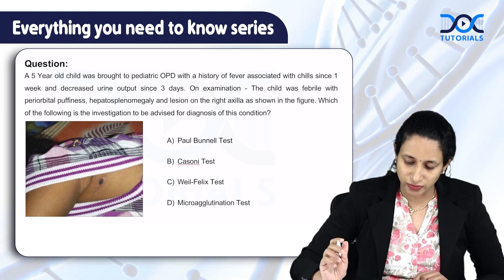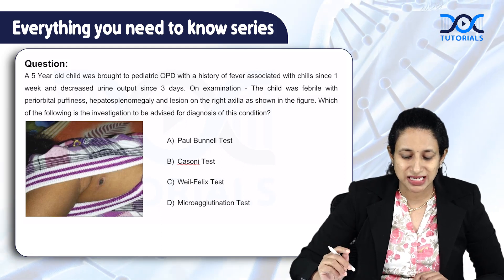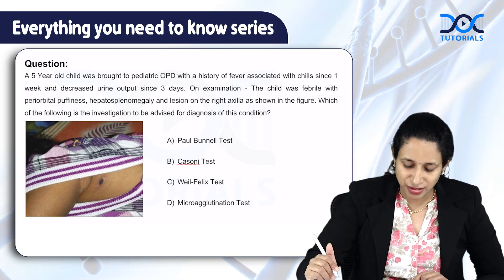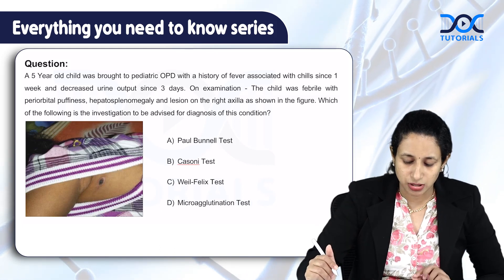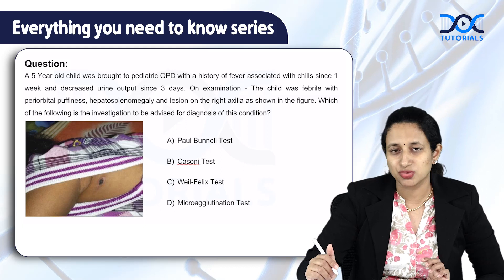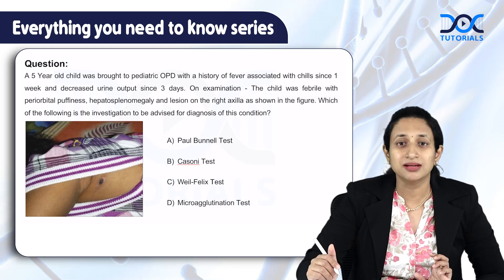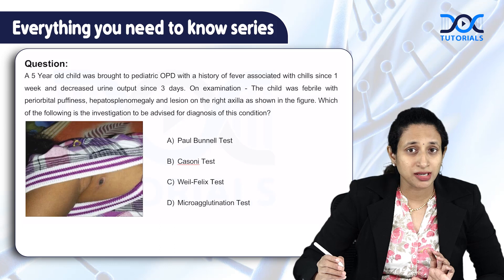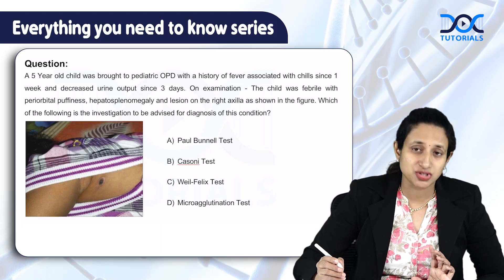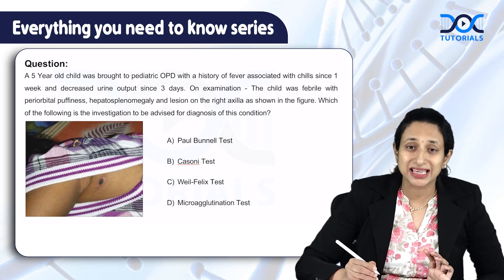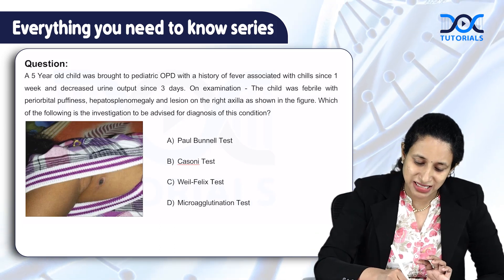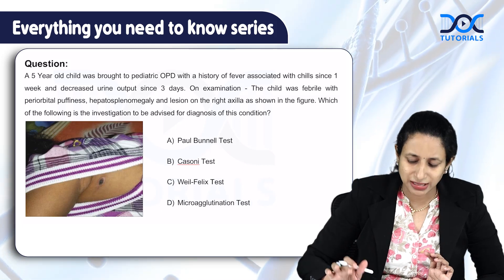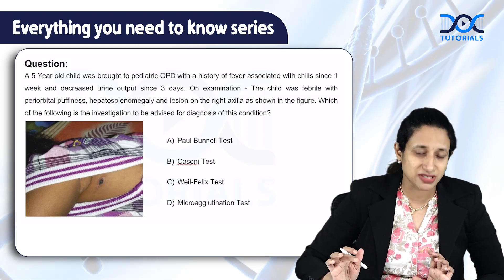They have also given you a figure here. Which of the following is the investigation of choice? In the given investigations, we are talking about one specific condition you should think about when it comes to the image given to you. Here we are talking about an image of what is known as a black eschar. Black eschar is something that is very typically seen with scrub typhus.